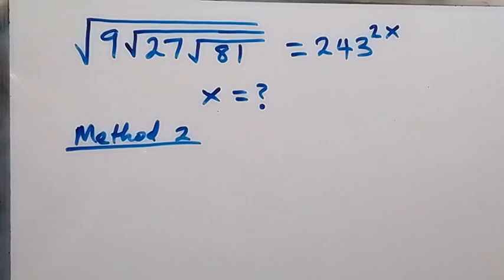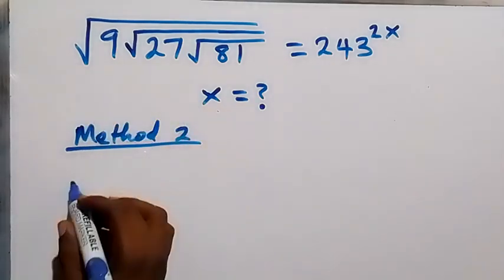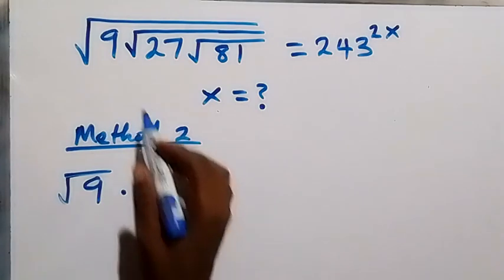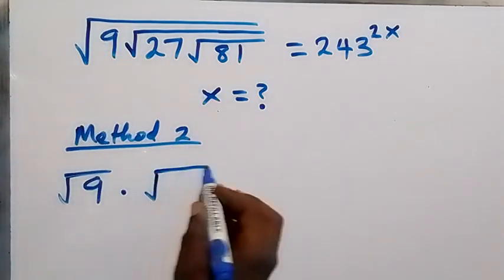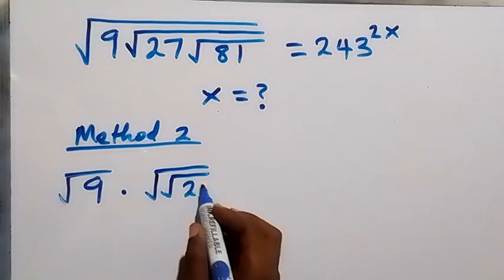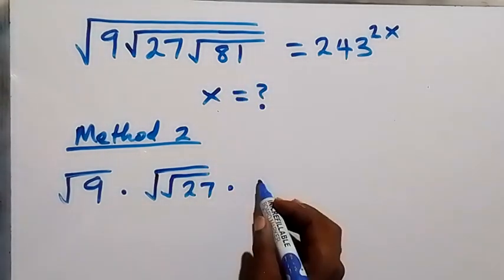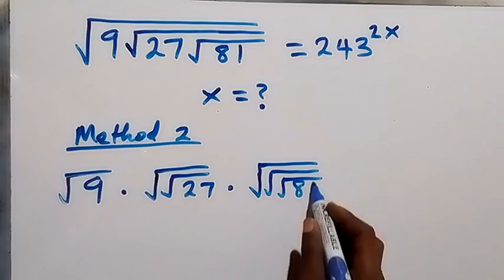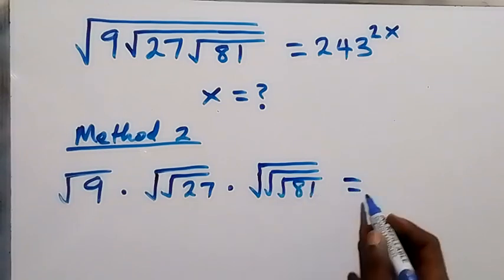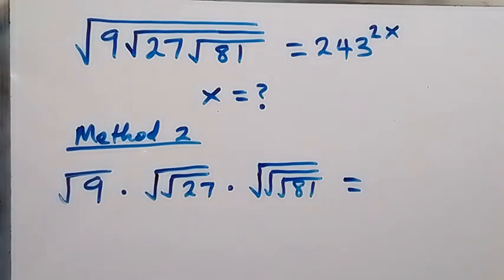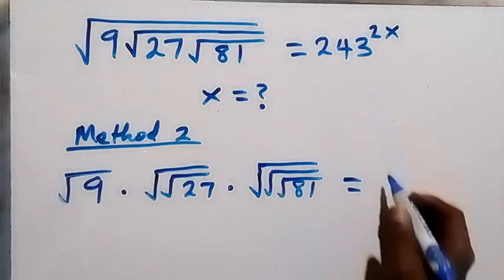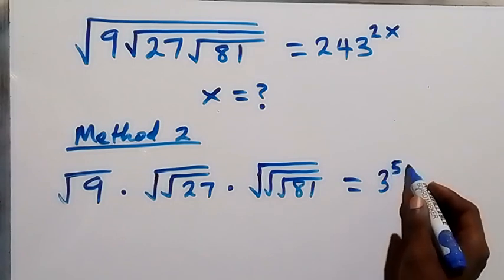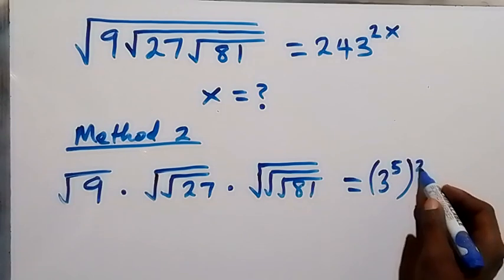Now let's use another method — Method 2. We can write this as the square root of 9, then multiply by 27, which now contains 2 roots, so we have root of root of 27. Then 81 contains 3 roots, so we have square root of square root of square root of 81, which equals — on this side we change 243 and write it as 3 raised to power 5, raised to power 2x.